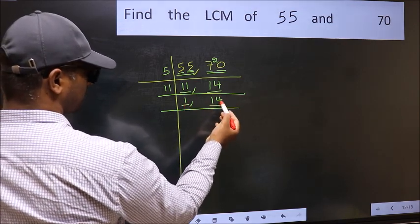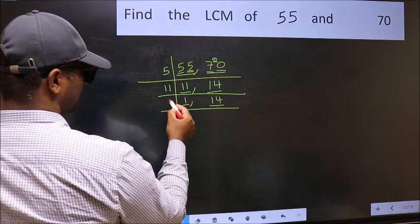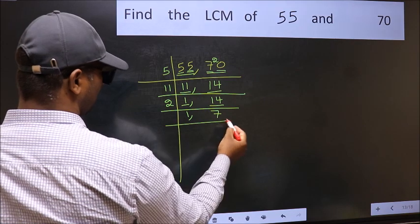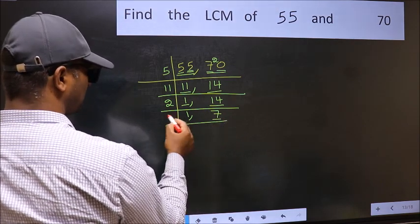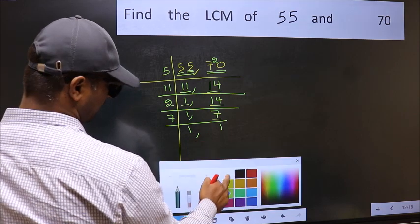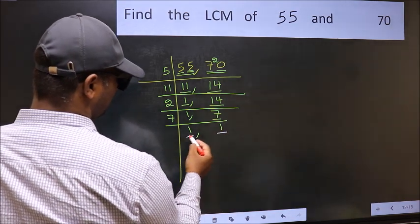So focus on the next number 14. 14 is 2 sevens 14. Now here we have 7. 7 is a prime number, so 7 once 7. We got 1 in both places.